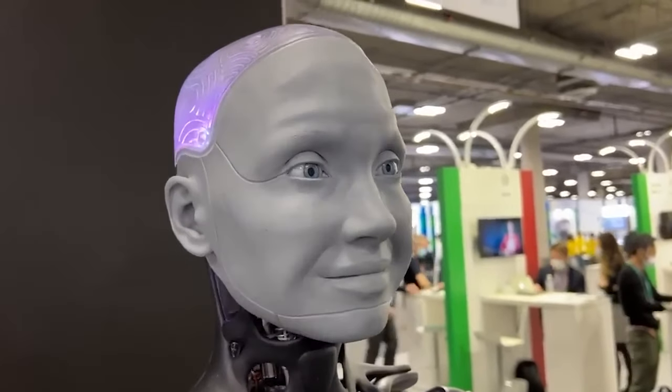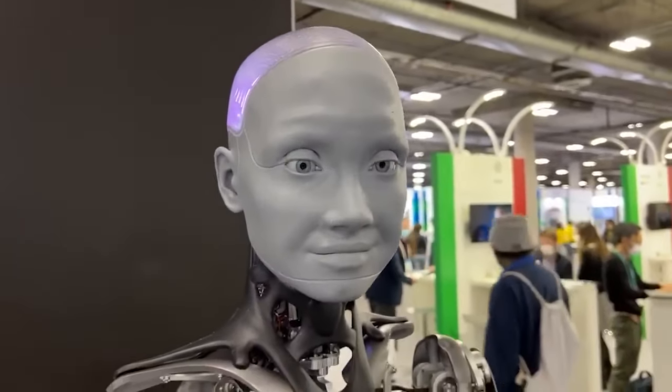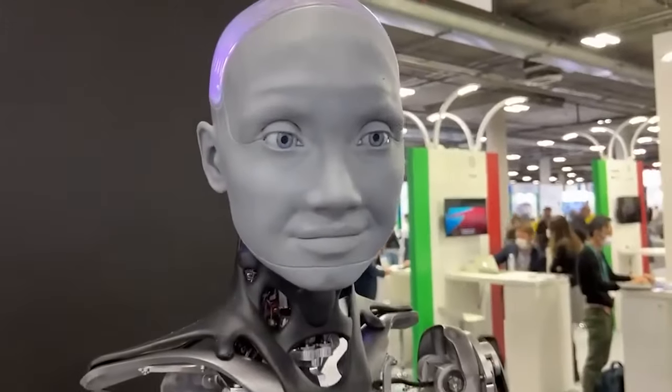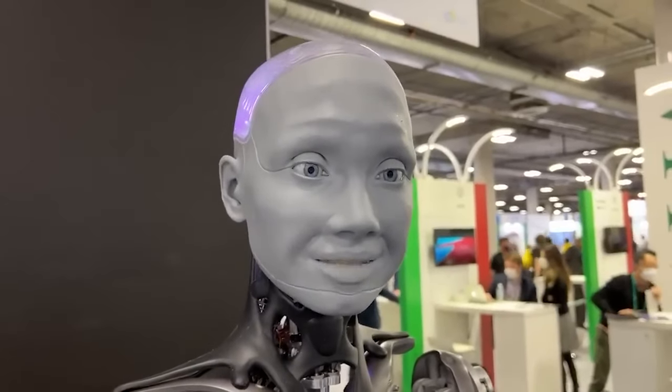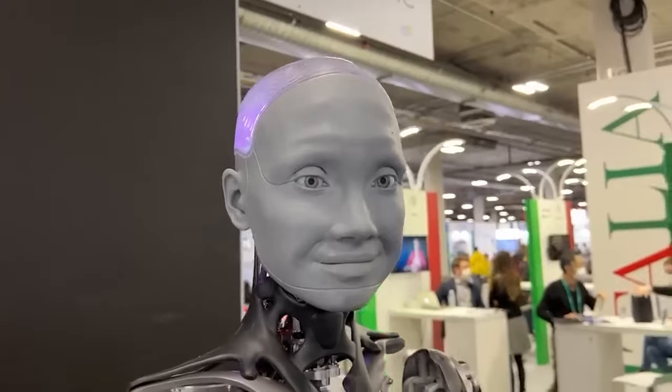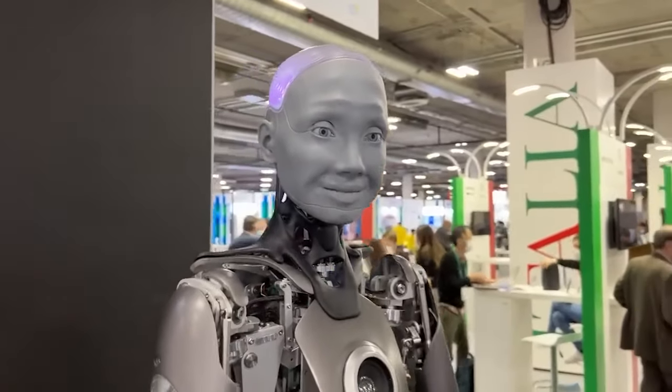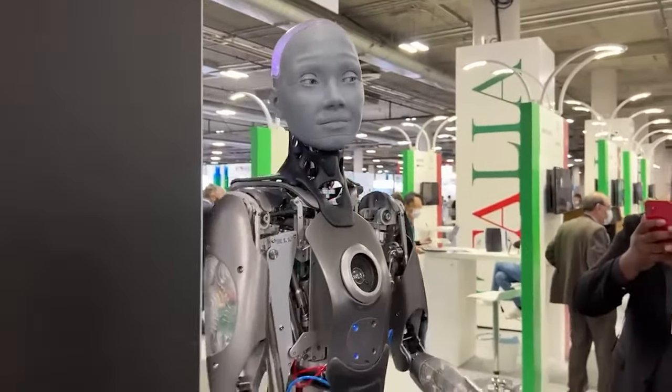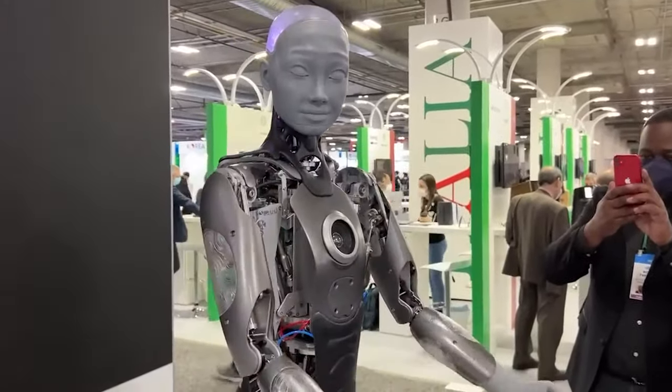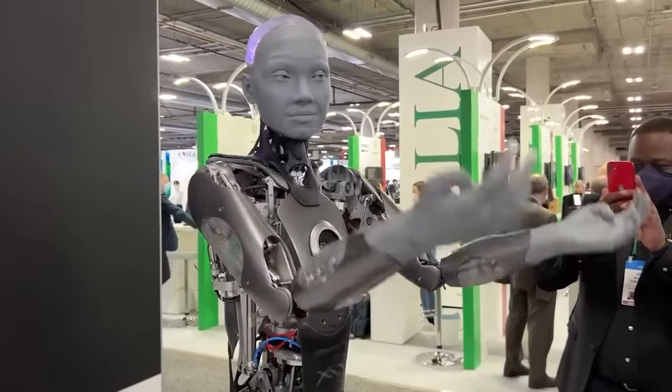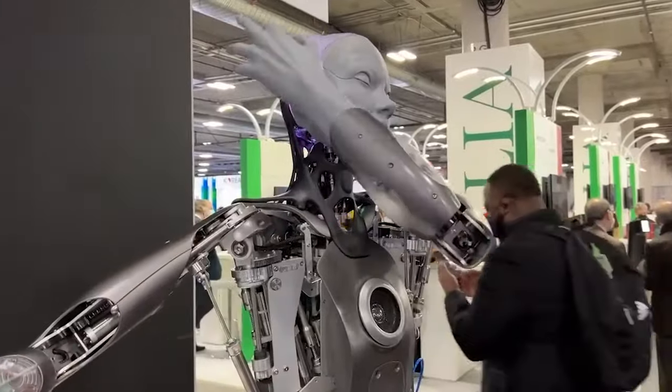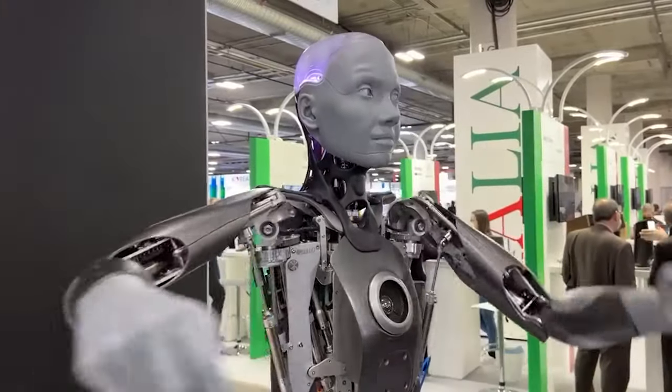This is Amica, a humanoid robot at CES 2022. Very realistic. Can you say hello, Amica? Hello there. So nice to meet you. Very realistic movements. Can you show us your moves again? Of course. I would love to. Fluid movements. And the eyes are really, I think what gets you, because they really lock on. When you look at this robot, it looks back at you.